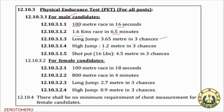You can complete 1.2 km in 3 chances. You can also complete 14 laps in 4.5 minutes in 3 chances. At 100 meters, you should reach the mark in 4 minutes. There are 3 chances given for these events.